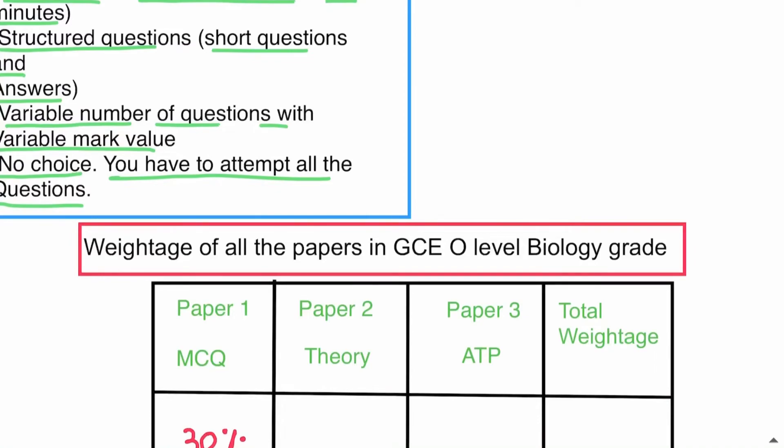And Paper 4, or ATP, has 20 percent weightage, which makes altogether 100 percent.